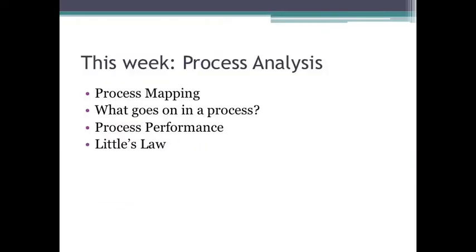What we're going to look at are several things within the area of process management. First, we're going to look at process mapping — how do we represent a process, how do we visualize a process? Then we're going to look at what goes on in the process, how to measure a process's performance. And we're going to look at Little's Law. Little's Law is a physical law that describes the relationship between how many items we can work on at one time, how long it takes for an item to go through a step in a process, and throughput rate. Throughput rate is churn — it is the rate at which items are completed through a process, and it is a measure of capacity for a step in a process and ultimately for the process as a whole.